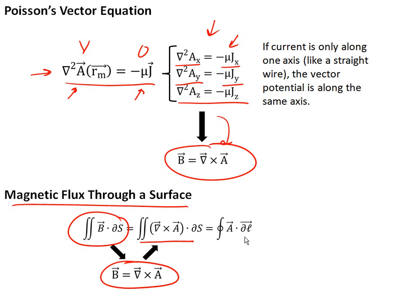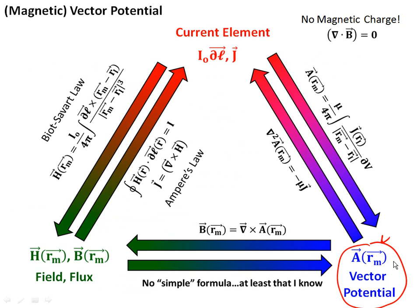If you go ahead and replace B with del cross A, which this equation allows you to do and substitute it in here, you essentially see now we can use Stokes' law to basically represent the flux through a surface as the line integral of the vector potential around the circumference of any surface. And so these are some useful things you can do to simplify problems when you're asked to calculate the magnetic flux through a surface, which, as I said, we're going to see the importance of in just a few lectures.